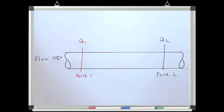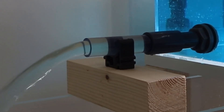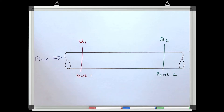If a pipe is flowing full and has no other point for water to enter or leave, what goes in must come out. We can say that for full pipe flow, discharge at one point is always the same as discharge at another point. This is the case regardless of whether the flow is steady or unsteady. For steady flow, the discharge is always the same with both distance and time in the pipe.